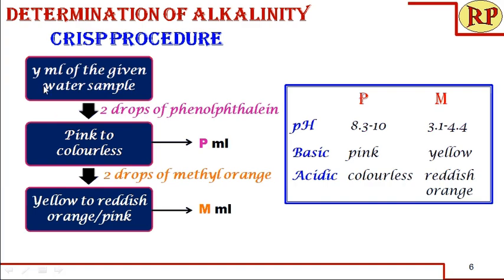If you take a certain amount of water — say Y ml, which can be 20 ml, 50 ml, or 100 ml — in a conical flask and add two drops of phenolphthalein, because alkalinity is present, the color will be pink. We titrate it against an acid such as sulfuric acid. When titrated, the pink color becomes colorless at the endpoint, and we note that volume as P ml. This endpoint occurs as the pH drops down to 8.3.